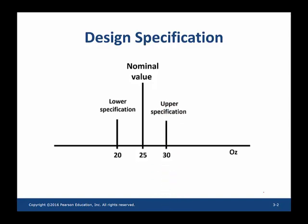On the other hand, I set 30 ounces as my upper specification. I cannot afford to fill in more water and sell it at the price of 25 ounces, so I'm vulnerable to profit losses. I have to be reasonable in setting the upper specification limit. The distance between the lower and upper specification is called the design specification width.